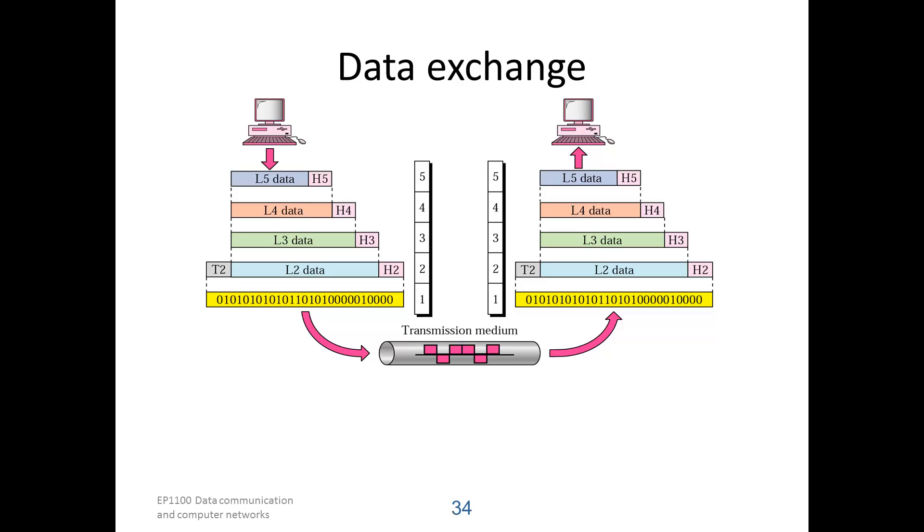The information marked H5 is destined for the application protocol on the receiver side. The PDU of the layer 5 is passed on as a block to layer 4. Layer 4 will add its own control information, which is of course destined for layer 4 on the receiver side.